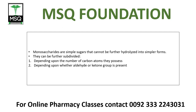Hum inhe further divide kar rahe hote hain depending upon the number of carbon atoms they have, or depending upon whether they contain aldehyde or ketone. Woh carbohydrates jinn mein aldehyde mojood hoga ya phir jinn mein ketone mojood hoga humhare paas mukhtalif properties show kar rahe honge. Examples mein humhare paas fructose aur glucose hain — glucose mein aldehyde group mojood hai, fructose mein ketone group mojood hai.